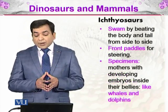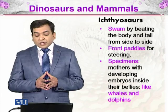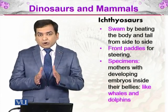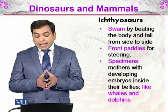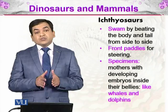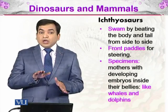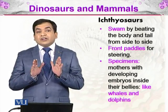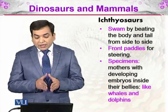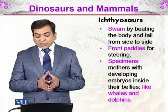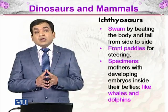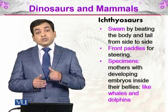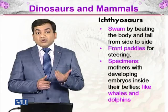Ichthyosaurs swam by beating their body and tail from side to side — they wiggled through the water just like a fish would do. Their front paddles were for steering only, so the front paddles were just for the purpose of determining their direction. There were also specimens in the fossil record showing a mother with developing embryos inside her belly, so they were viviparous.